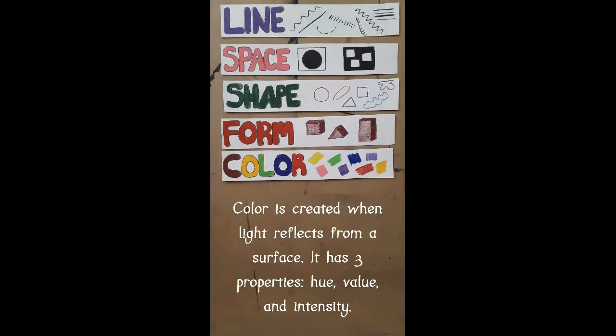Color is created when light reflects from a surface. It has three properties: hue, intensity, and value. Hue is the name of a color, for example, red, yellow, or blue. Value we will get to in a second. Intensity refers to the saturation or brightness of a color.